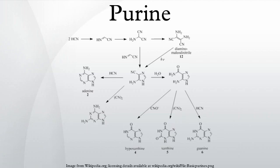Notable purines: there are many naturally occurring purines. Two of the five bases in nucleic acids, adenine and guanine, are purines.